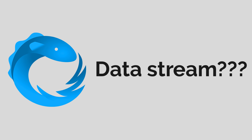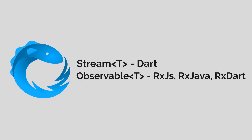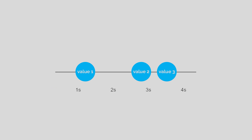What is a data stream? A data stream is basically an object that emits multiple pieces of data over time. Depending on what language and library you're using, that data stream can have different names. For example, in Dart it's going to be called a stream, while in any of the Rx libraries the data stream is called an observable. The main thing is that a data stream is an object that can emit data over time.